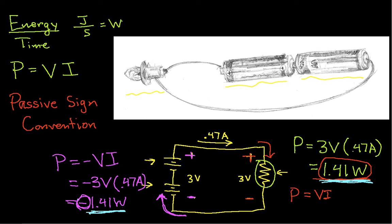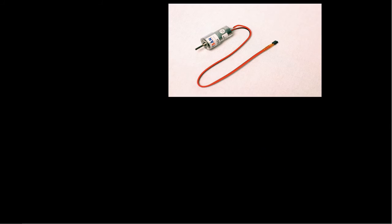Let's do a few more examples of finding power that is supplied and dissipated. This is a picture of an electrical motor. And suppose that I take my electrical motor and I hook it up to a battery.